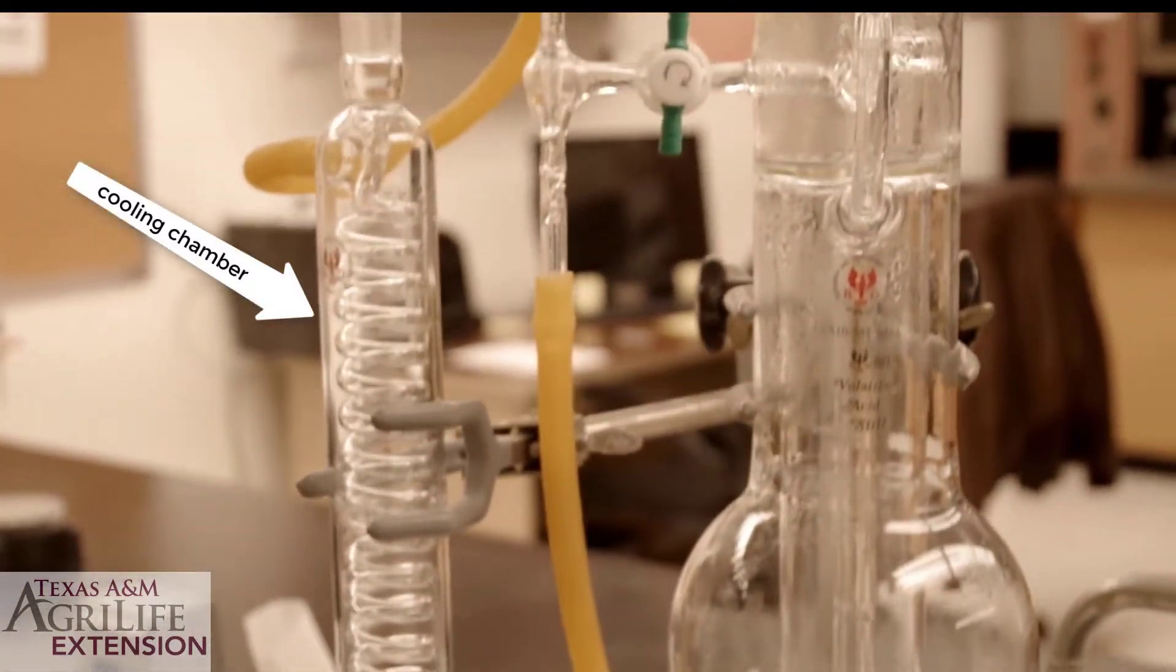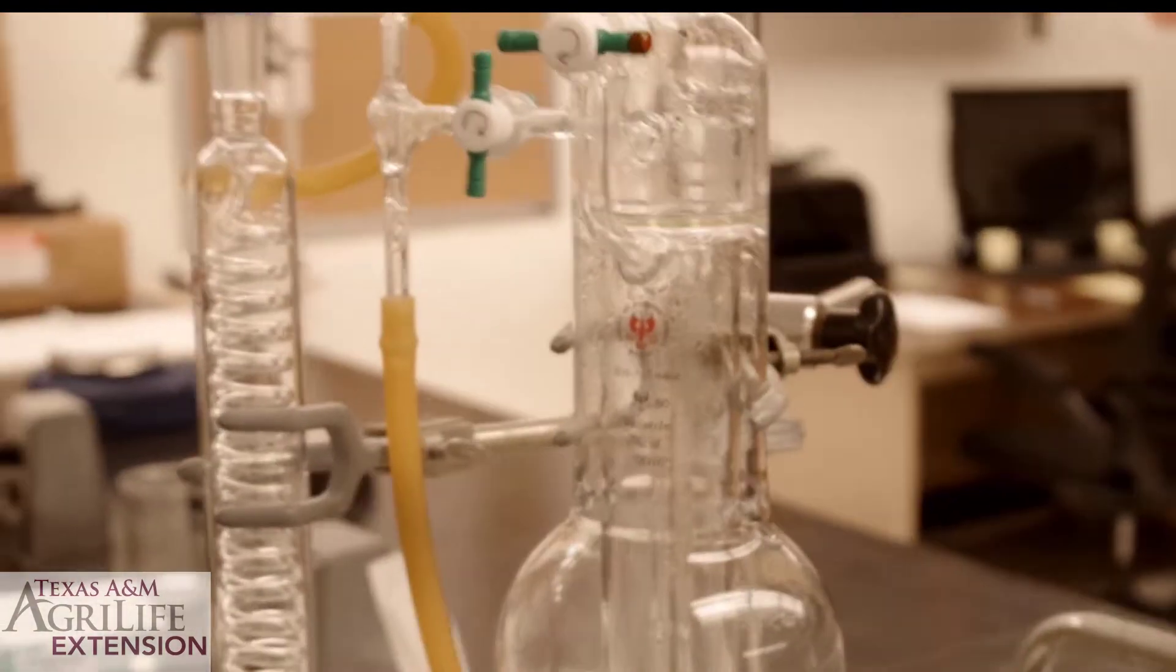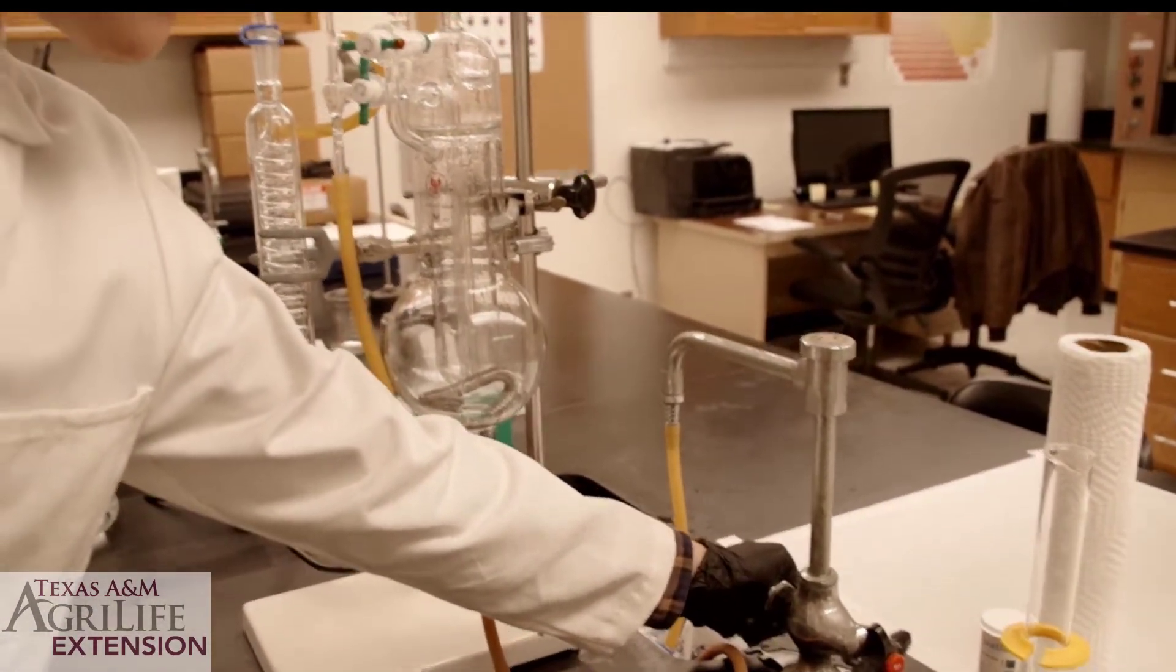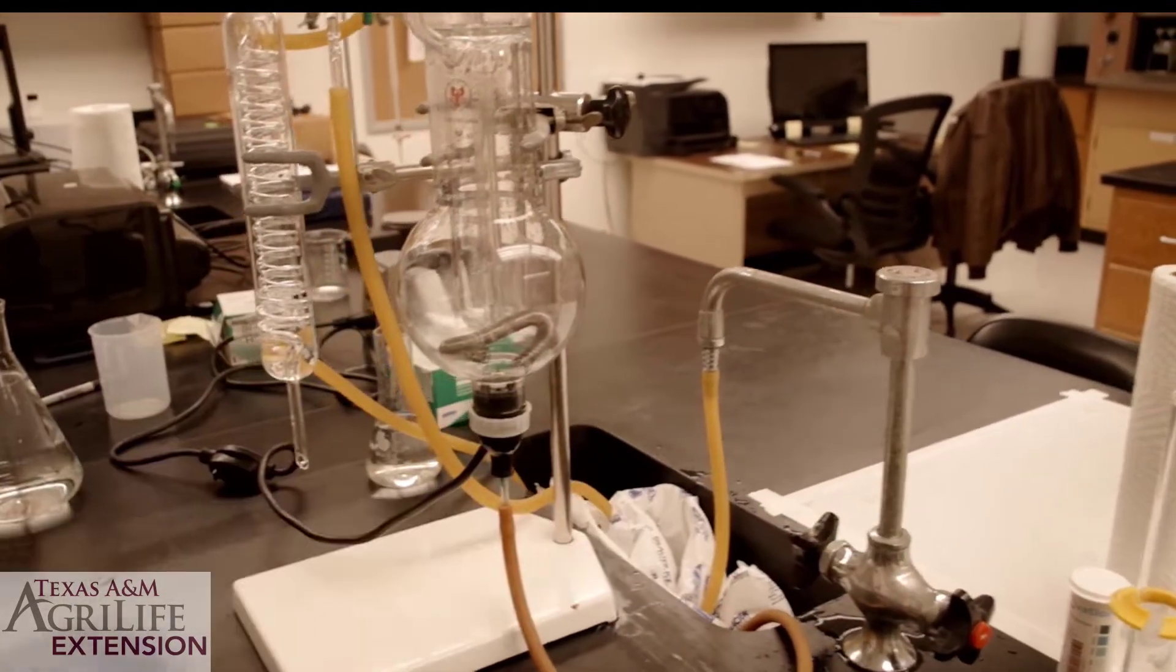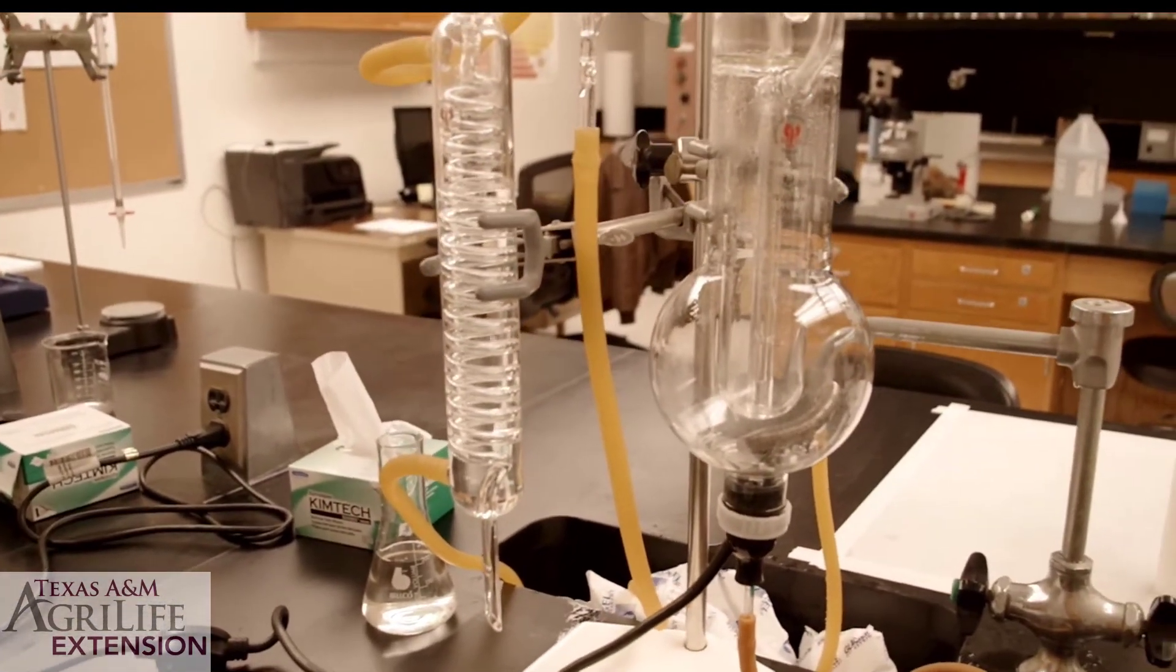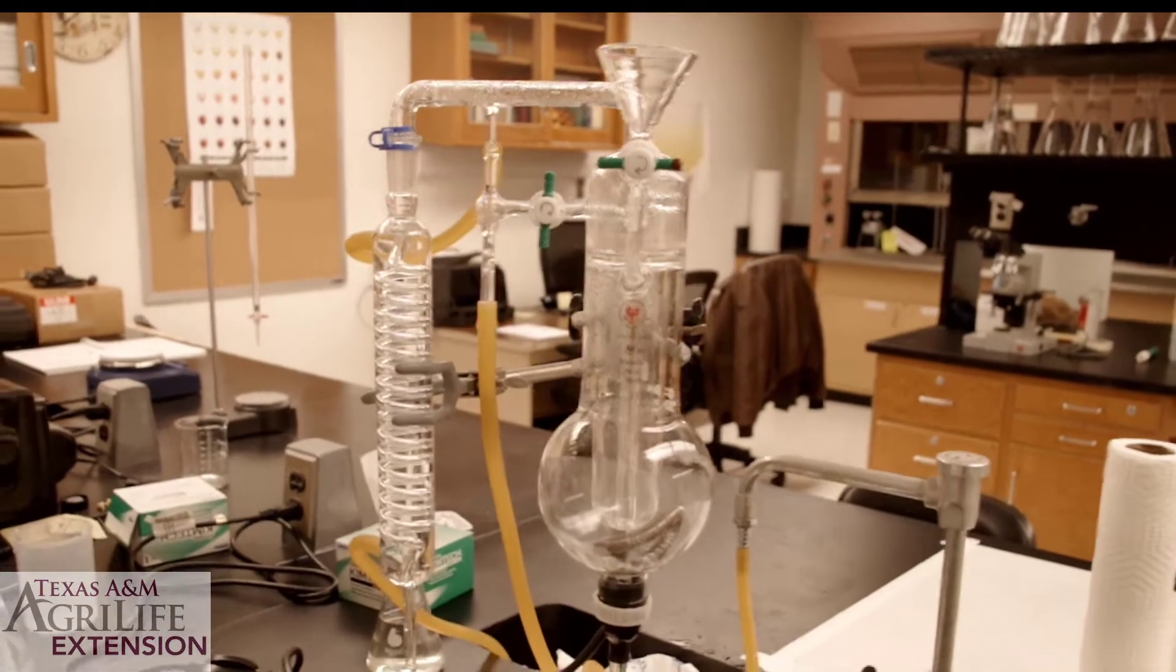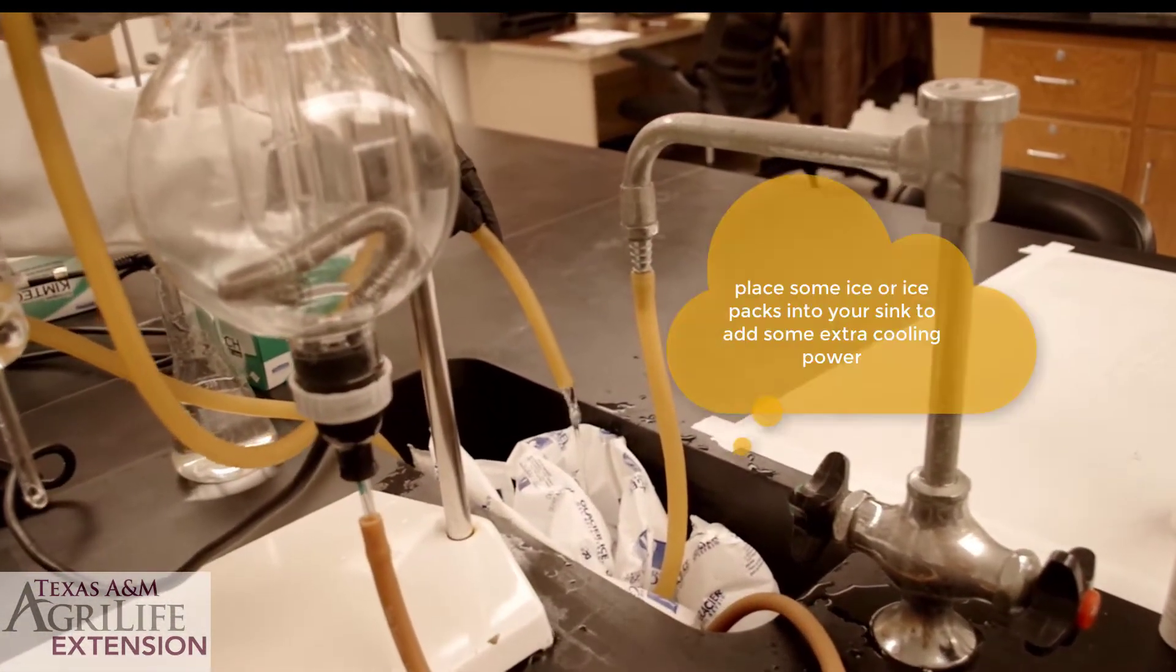On the left we have the cooling chamber. Cold water runs through the cooling chamber in order to condense the volatilized sample traveling through the inner glass coil. Before running samples make sure the cooling chamber has a steady supply of cold water by slowly opening the sink tap connected to your apparatus. Make sure the cooling water evacuates correctly through the middle hose into your sink.